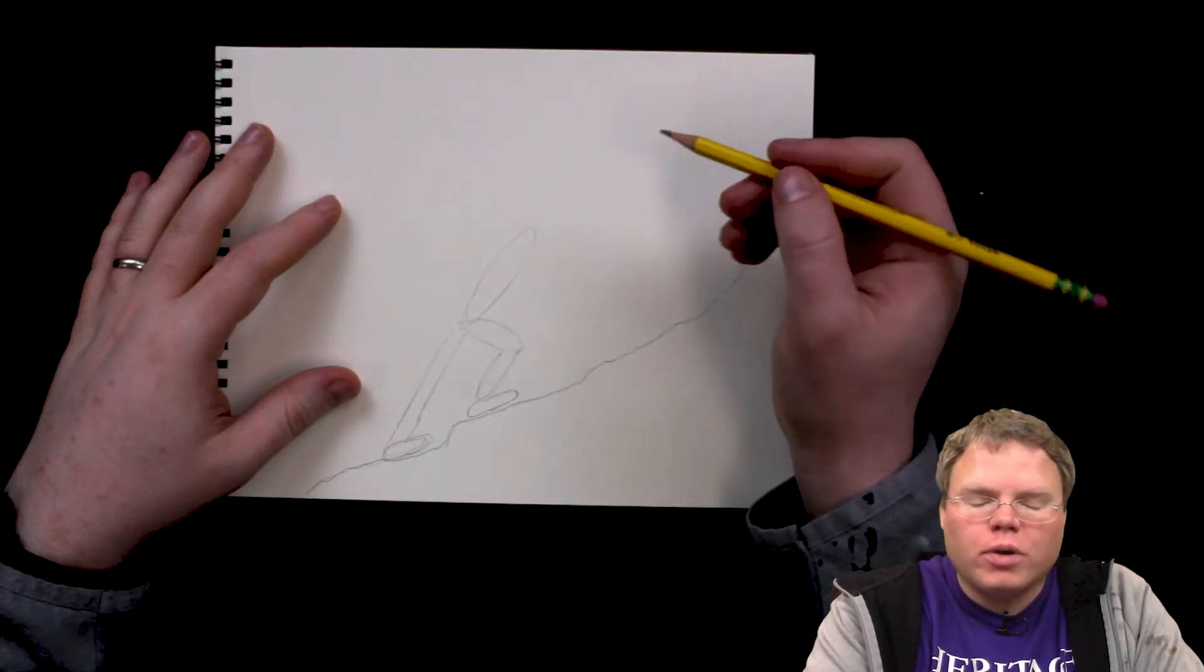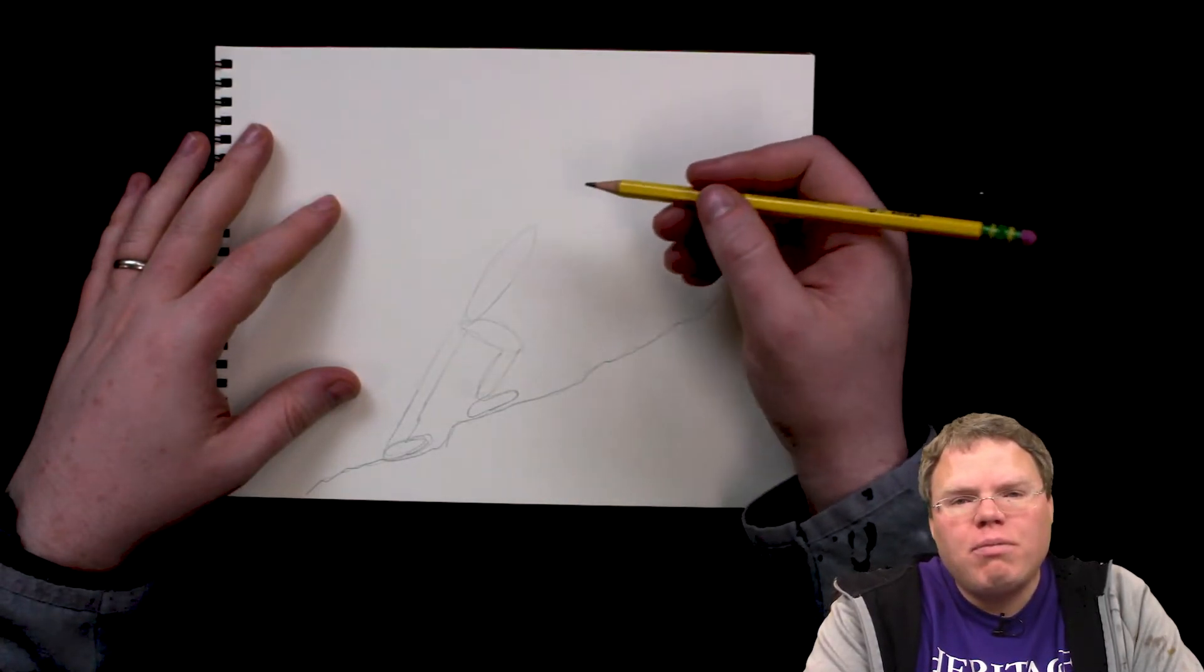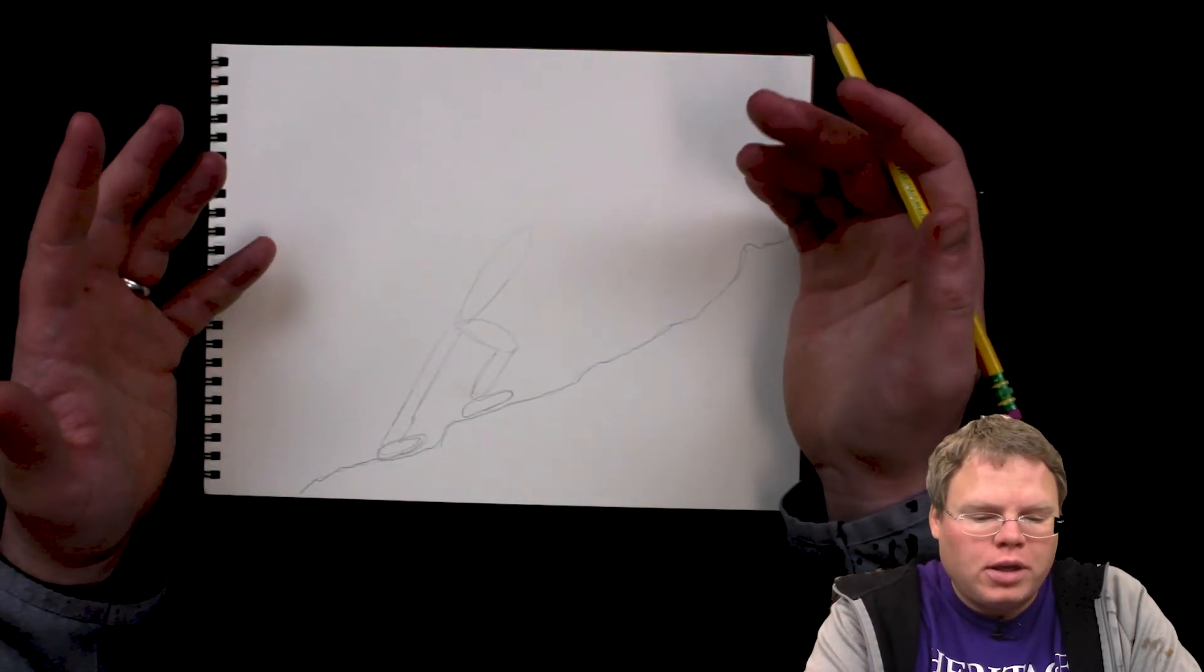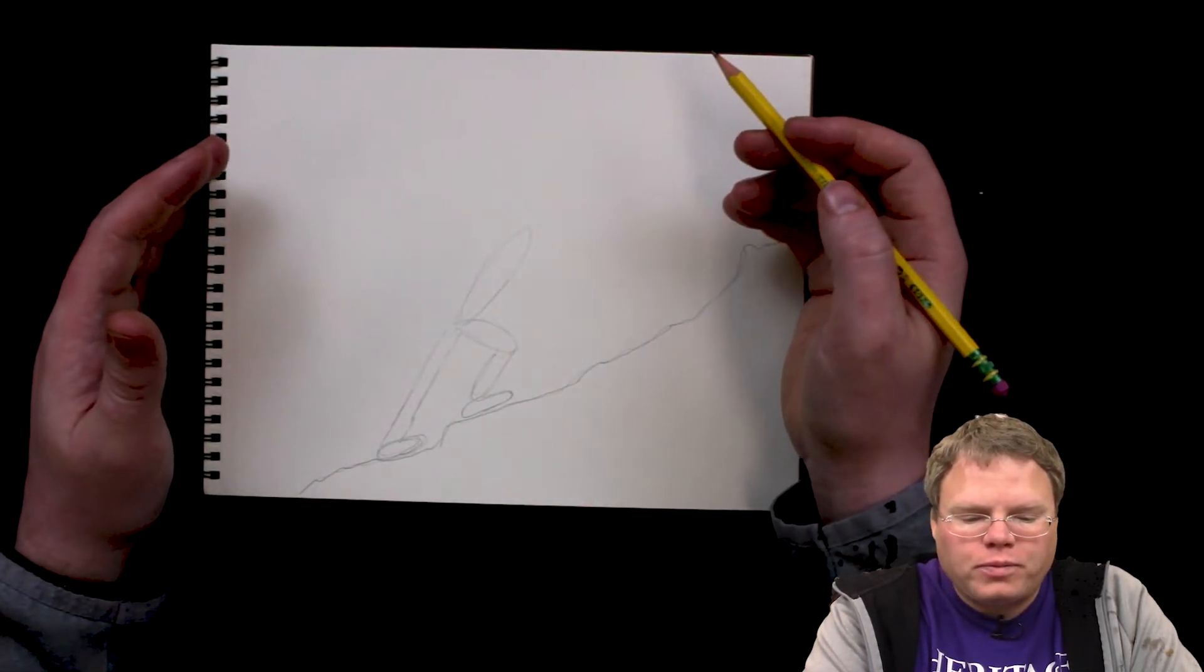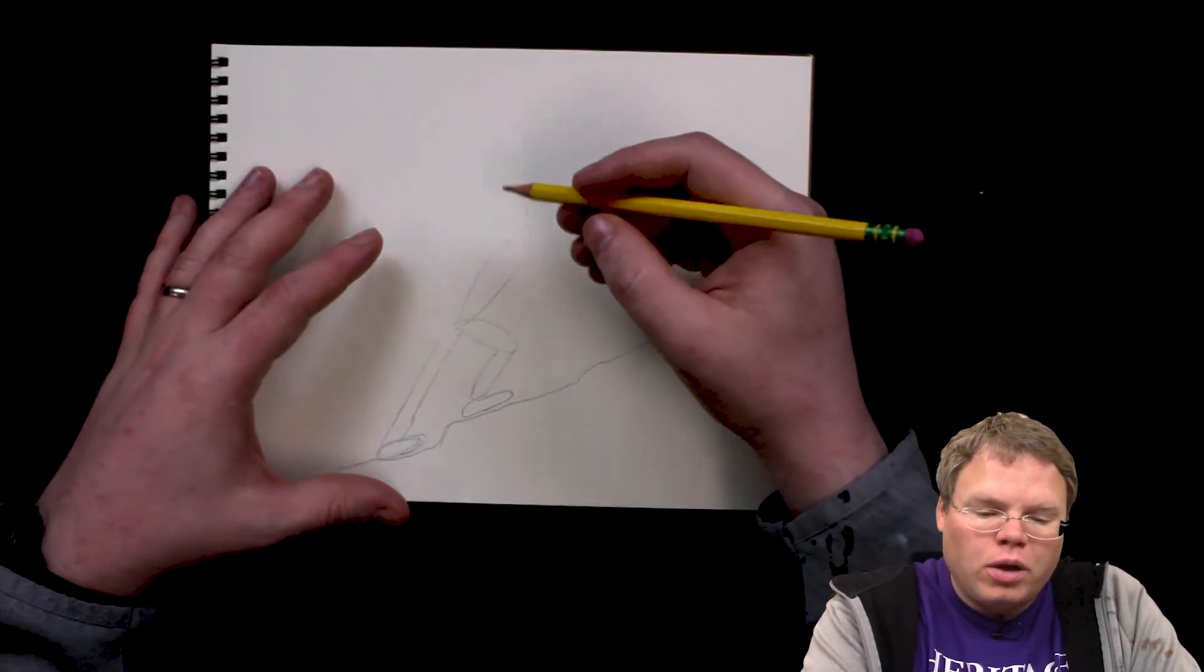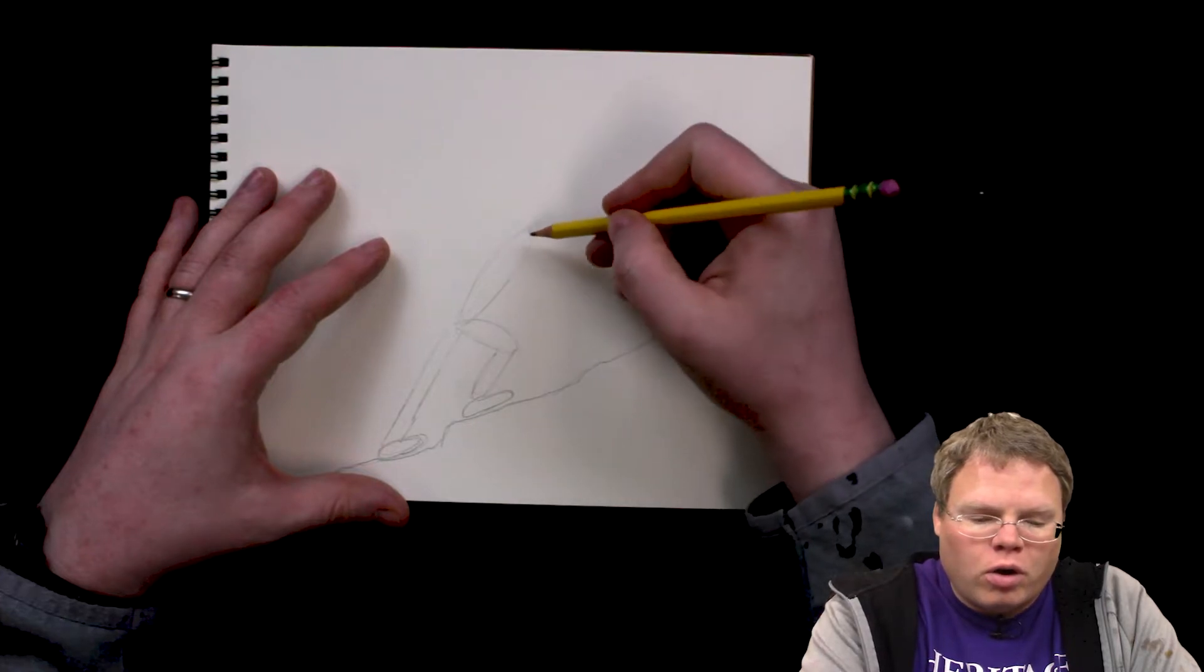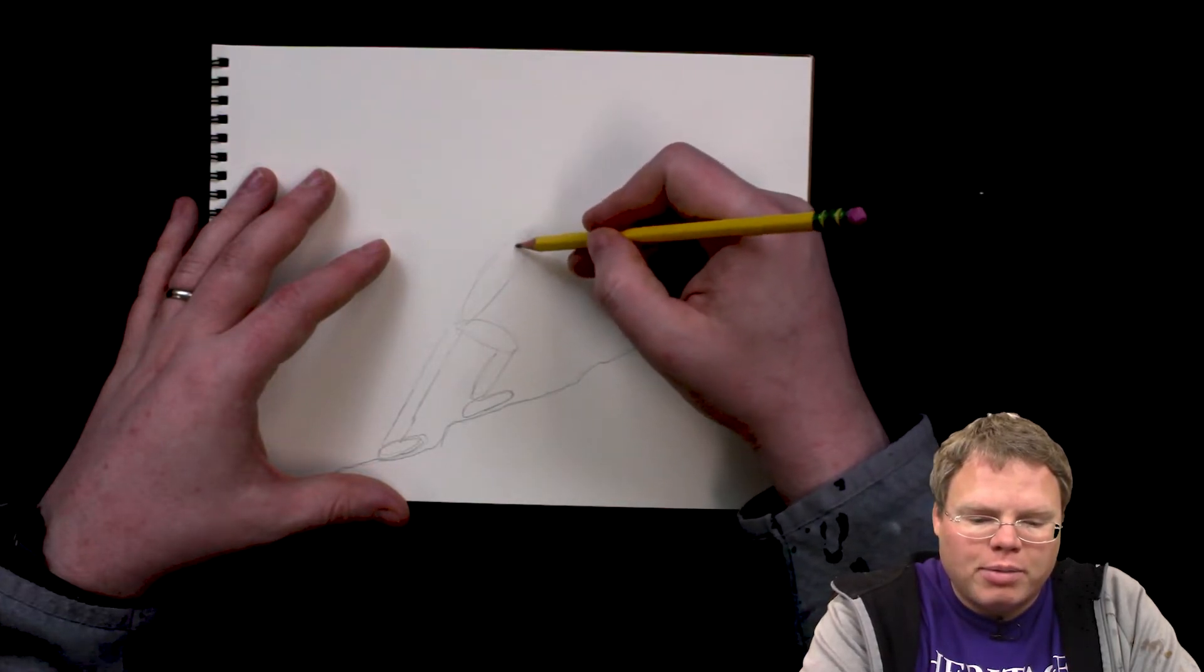His hands. Well, if it's the same character I've been doing, he's going to have a sword and a shield. So how's that going to work out? Well, maybe this arm, the arm is going to come from the top of the body.